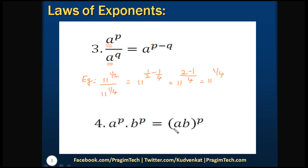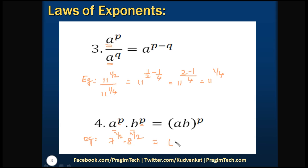The fourth law: a to the power of p multiplied by b to the power of p equals (ab) to the power of p. When the powers are the same, even if the bases differ, we can multiply the bases. Example: 7 to the power of 1/2 multiplied by 8 to the power of 1/2 equals (7 × 8) to the power of 1/2, which is 56 to the power of 1/2.